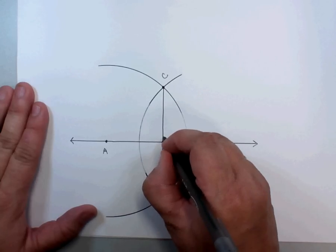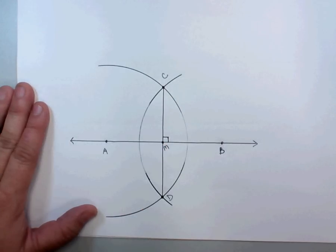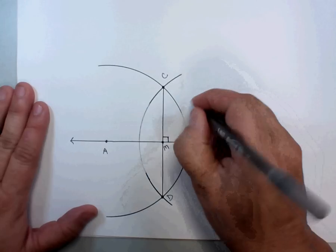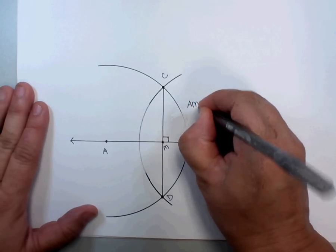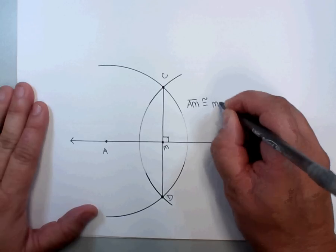The cool thing is this is going to be perpendicular, so we've also constructed a perpendicular bisector. We know at this point that line segment AM is going to be congruent to line segment MB.